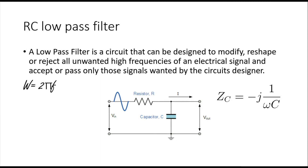So whatever input we give, that will be the output. As the frequency increases above a cutoff frequency — when the frequency is very high — the denominator becomes very large, due to which the impedance of the capacitor decreases. When the impedance of the capacitor decreases, we replace it by a short circuit, which means the potential difference across the terminals of the capacitor is very low or essentially zero. So high frequencies are attenuated while low frequencies are passed.